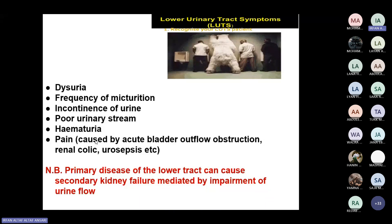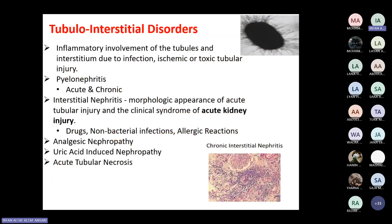There is a problem with the kidneys, and they might land up into renal failure — sometimes acute and most of the time chronic renal failure — due to obstruction of the flow of urine. Now we go to the tubulo-interstitial disorder or tubulo-interstitial diseases of the kidney.